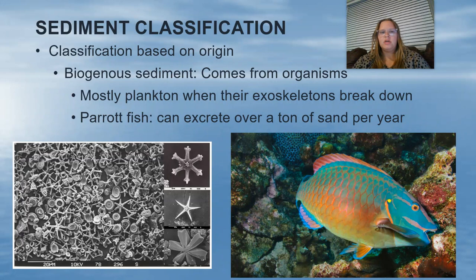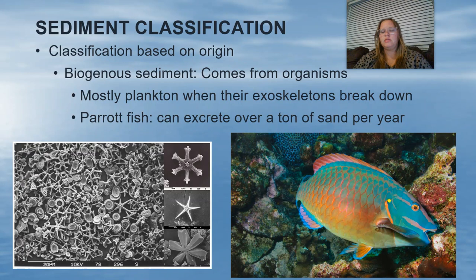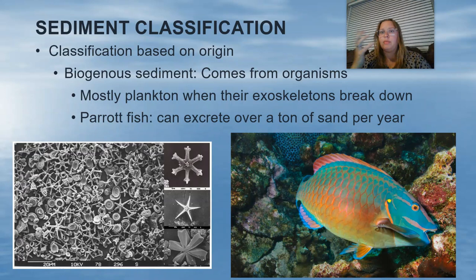The next type of sediment is biogenous — 'bio' meaning life. This comes from living organisms, mostly animals, but also plants like phytoplankton. Most of our biogenous sediment comes from plankton, whose calcareous exoskeletons — made up of calcium — end up breaking down and being deposited into our sediment.